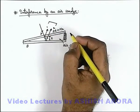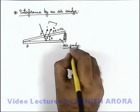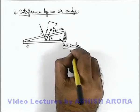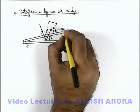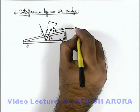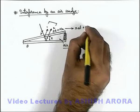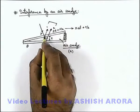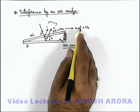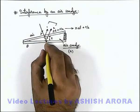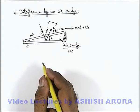If this air wedge is replaced by another medium having refractive index mu, but if it is rarer than glass, then this path difference will be replaced by 2 mu t plus lambda by 2, because the equivalent path of this distance 2t in air will be finally taken as 2 mu t, plus lambda by 2 reflected from a denser medium.